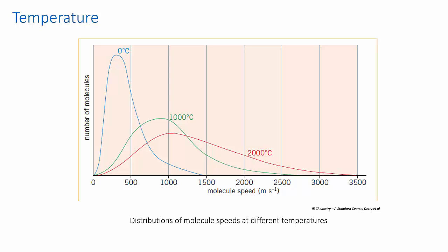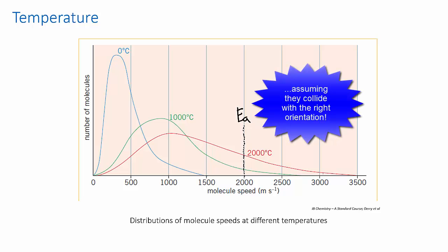Now, imagine a reaction for which the activation energy is here. Remember that each speed on this axis corresponds to a particular kinetic energy. This means that any molecules with speeds greater than this will have a successful collision, while those slower than this will not.